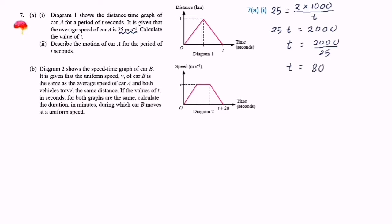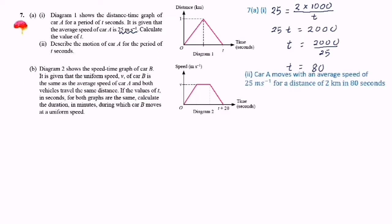Part 2: Describe the motion of car A for the period of 3 seconds. When we describe the motion of a car, we need to include distance, time, and average speed. So you write the answer like this: Car A moves with an average speed of 25 metres per second for a distance of 2 kilometres in 80 seconds.